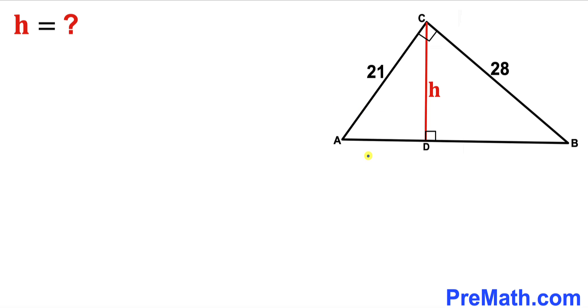In this video we have a right triangle ABC whose side lengths are 21 and 28 units as you can see in this diagram. Moreover, this line segment CD is perpendicular to its third side AB. Now we are going to calculate this height H.